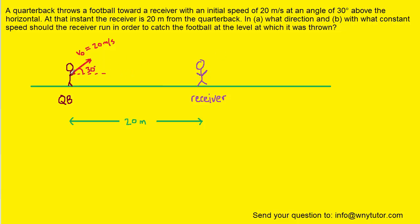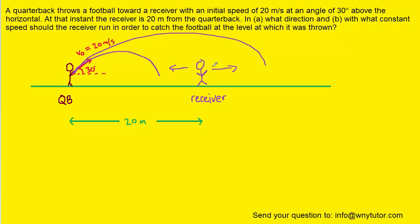Now there are two possibilities here. If the ball, which is thrown by the quarterback, falls short of 20 meters, then the receiver is going to have to run toward the quarterback. On the other hand, if the ball is thrown beyond 20 meters, then the receiver has to run in the opposite direction. Those are the two possible options, and our goal is to figure out which of those two options is at play here.